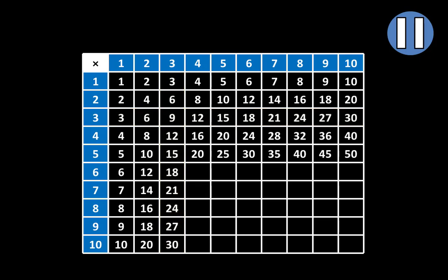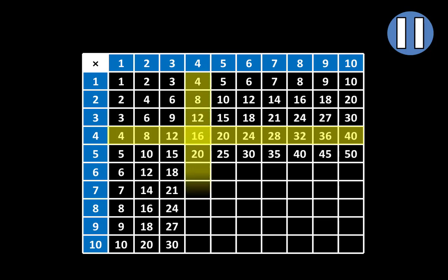In the next row, we can see all of the multiples of 4 from 4 to 40: 4, 8, 12, 16, 20, 24, 28, 32, 36, and 40. So in this column, we'll see all of the multiples of 4 from 4 to 40. We see 4, 8, 12, 16, and 20. So fill in 24, 28, 32, 36, and 40.